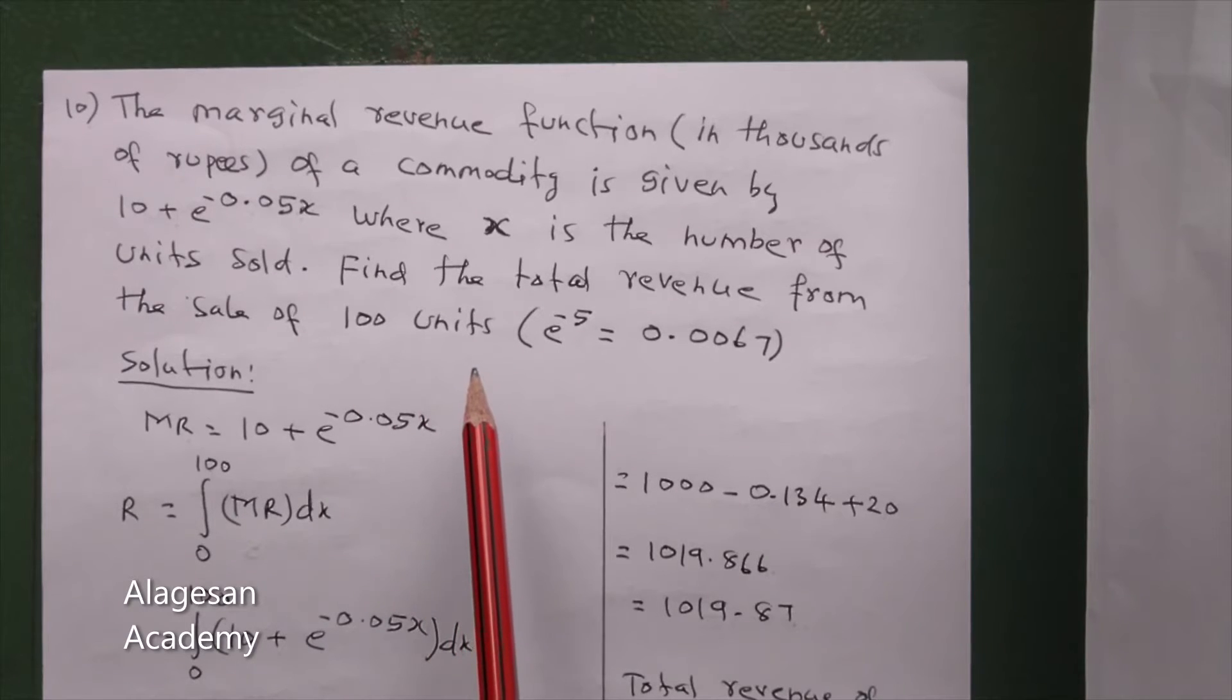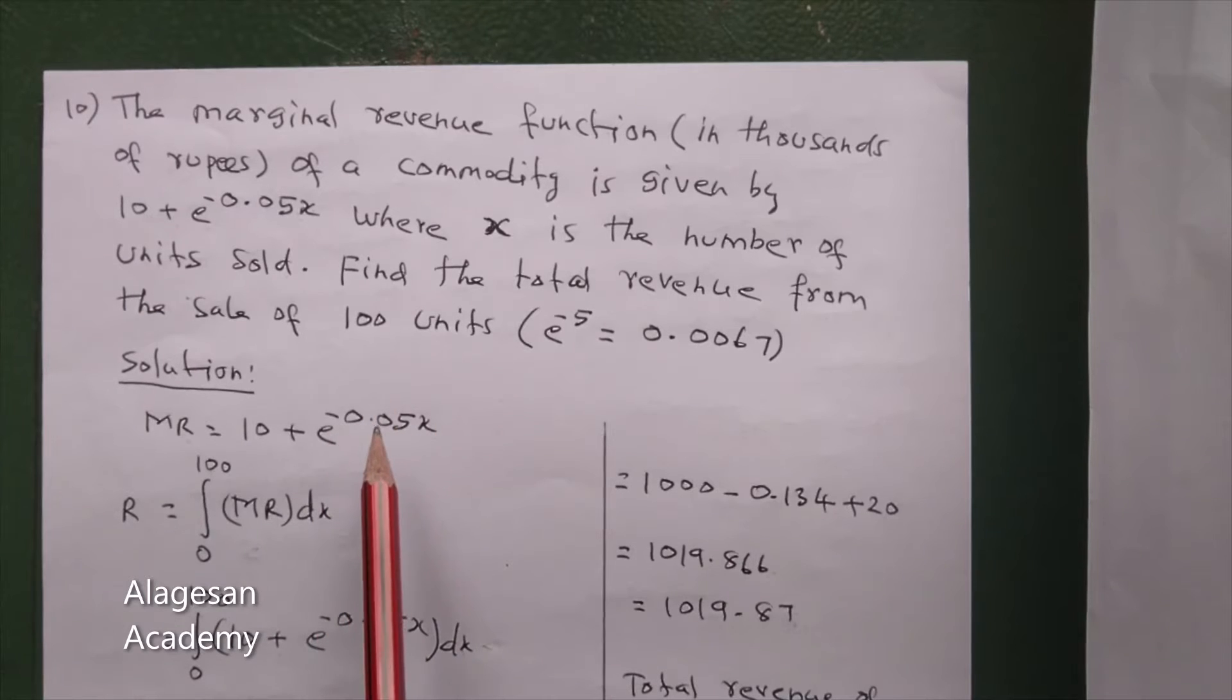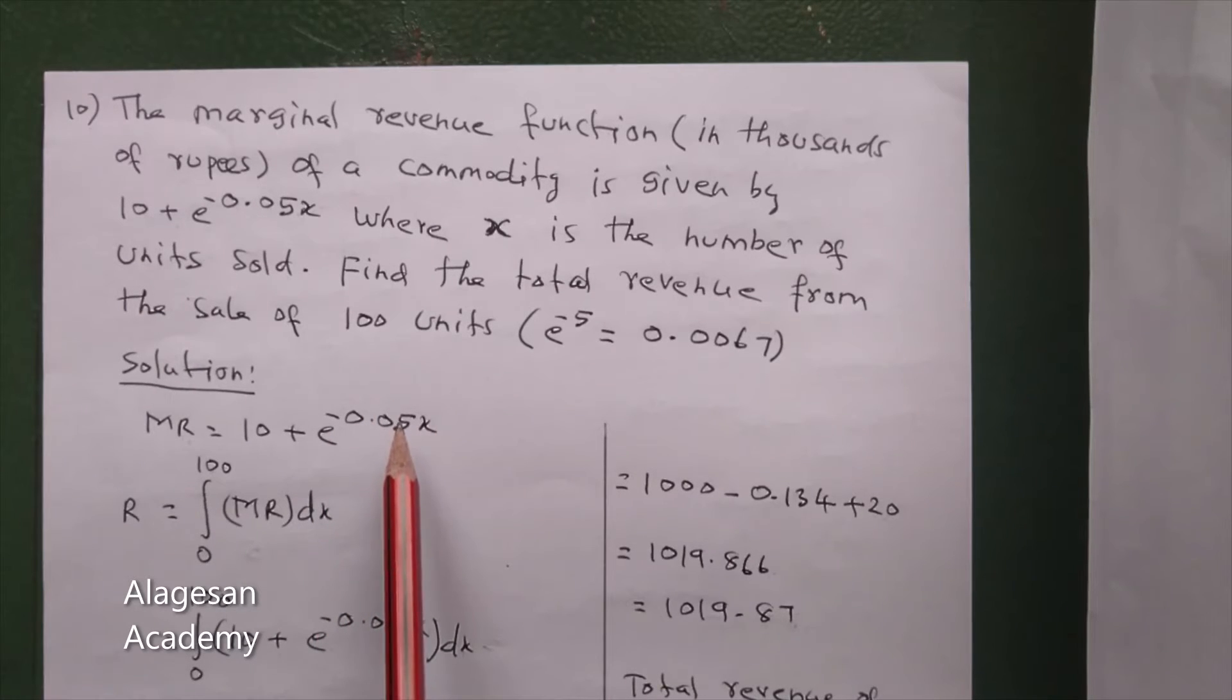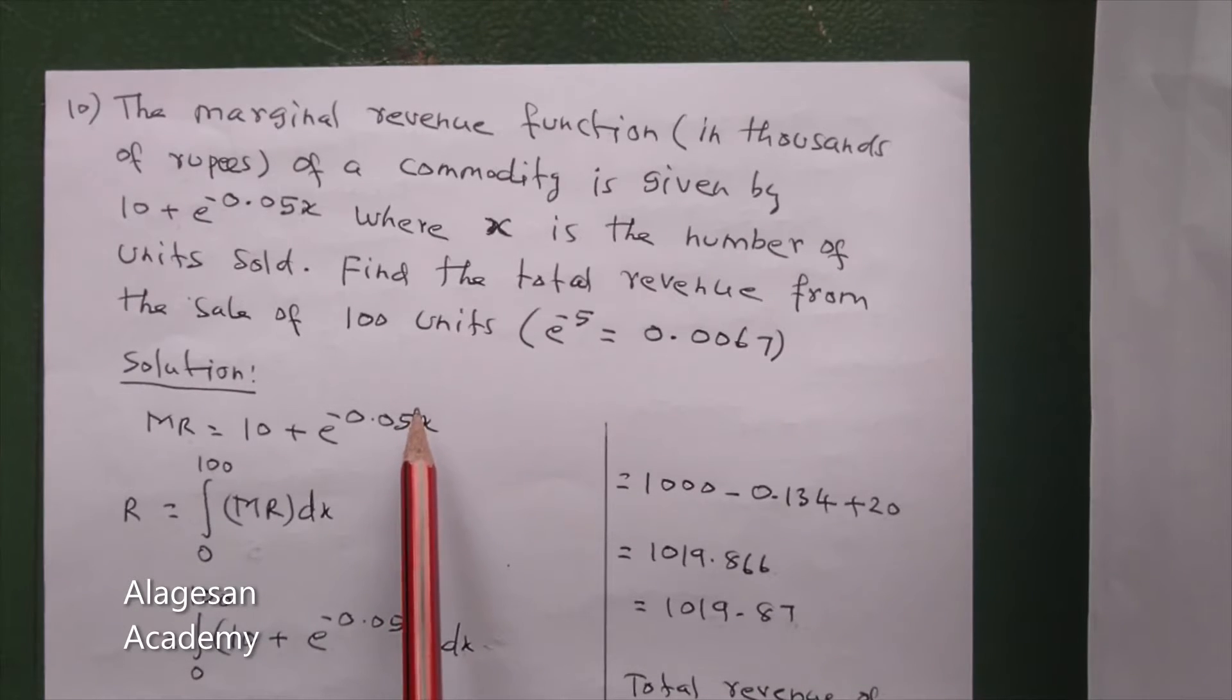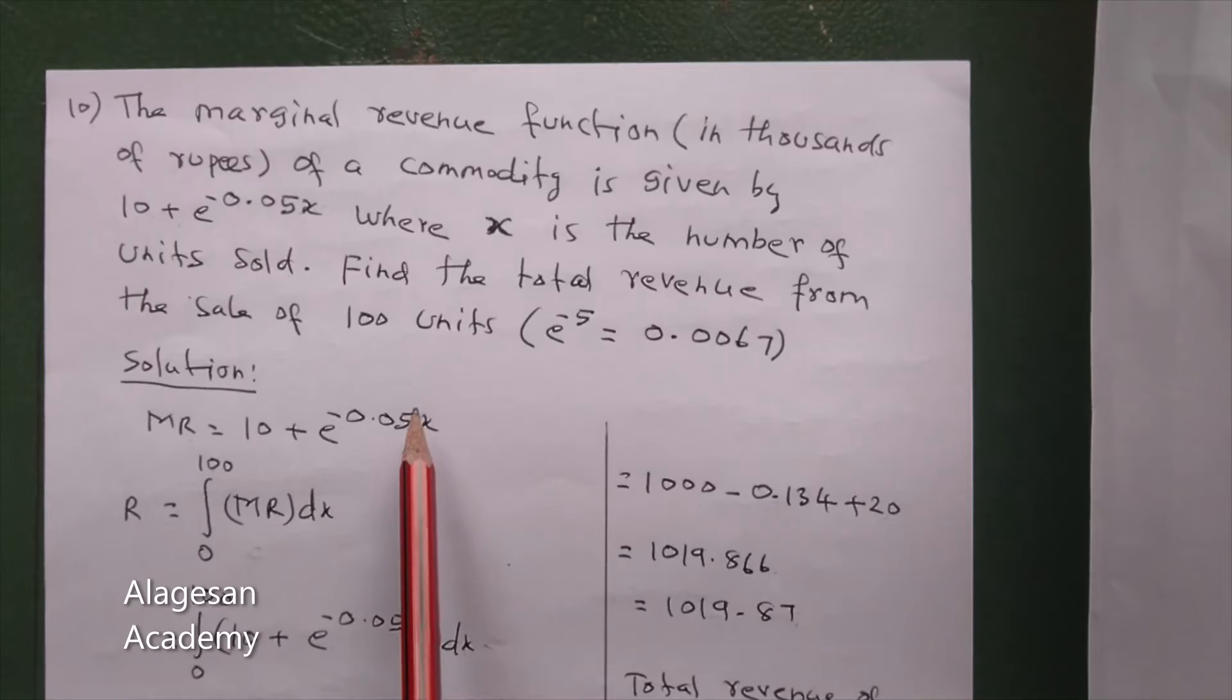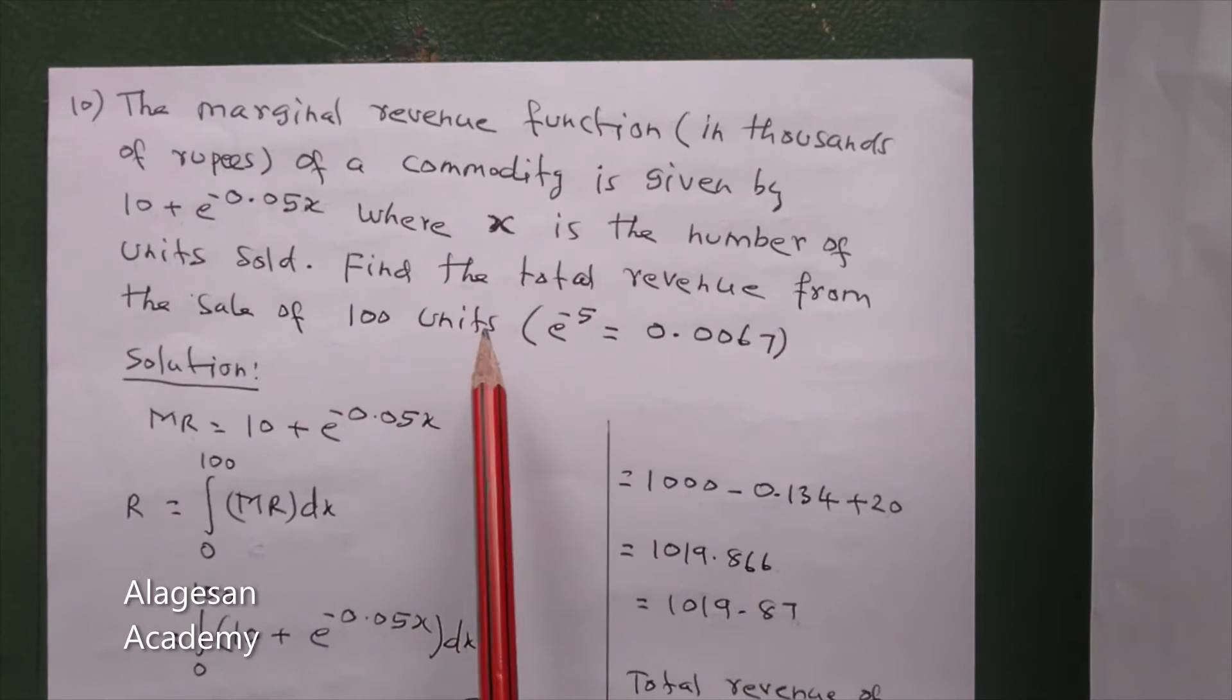This formula is what we have to use. We have to find R by integrating MR, taking the limit 0 to 100. With 0 to 100 limit, you can either directly integrate or add a constant k.